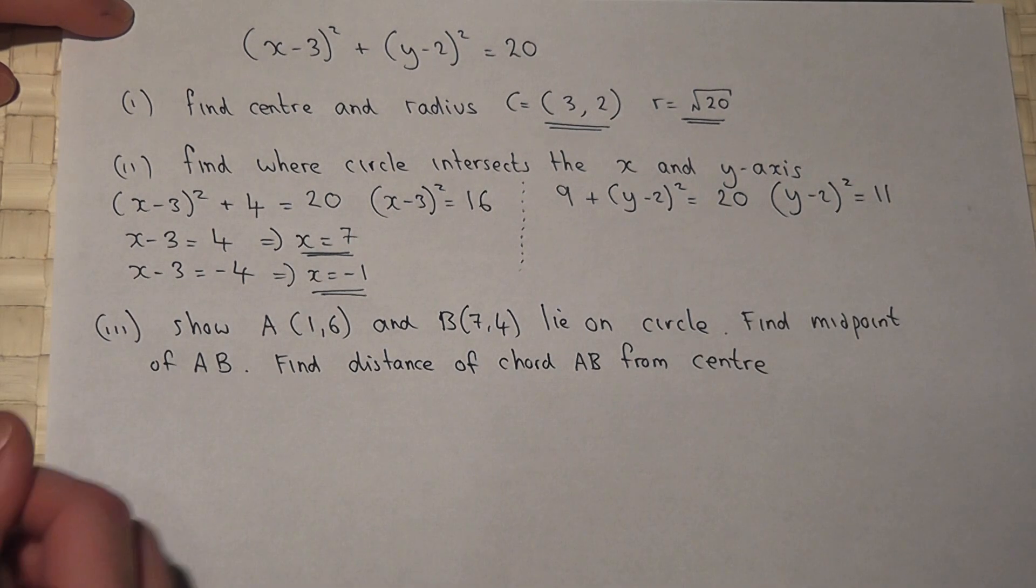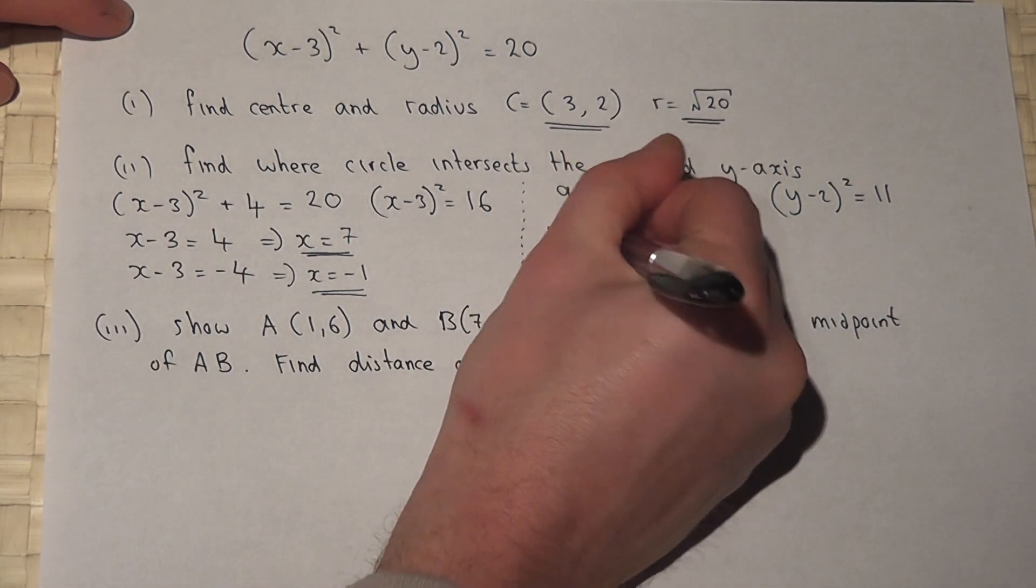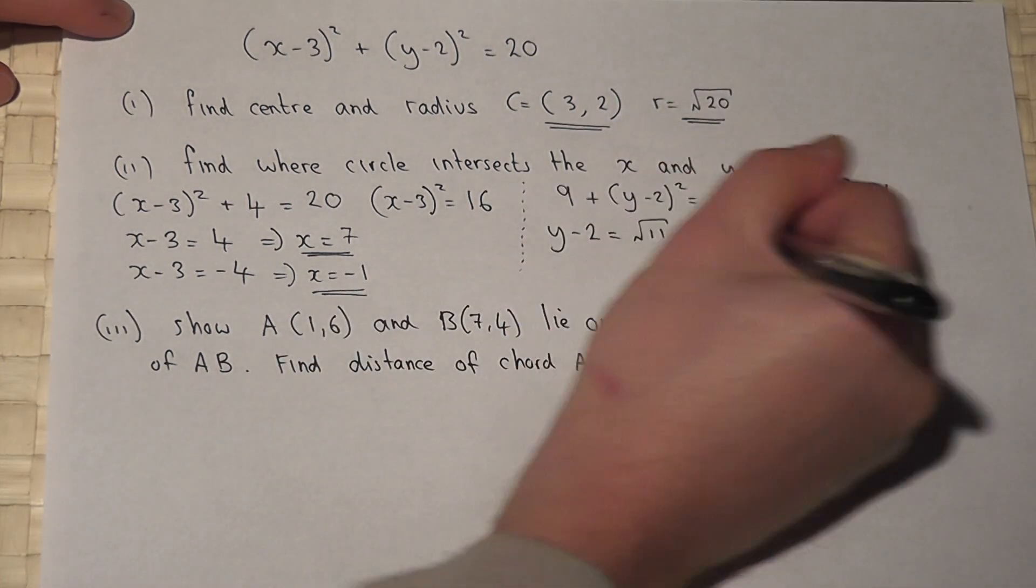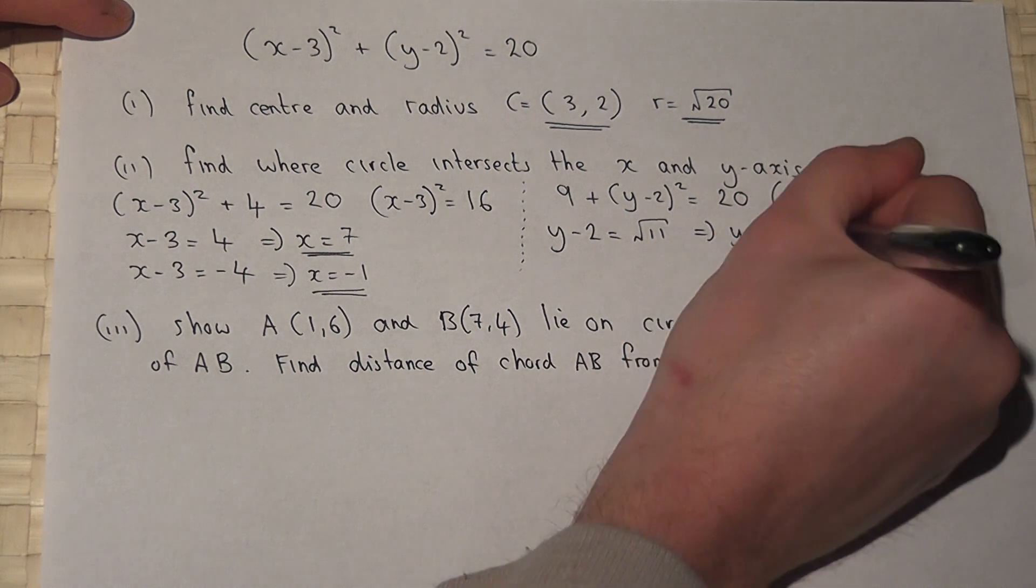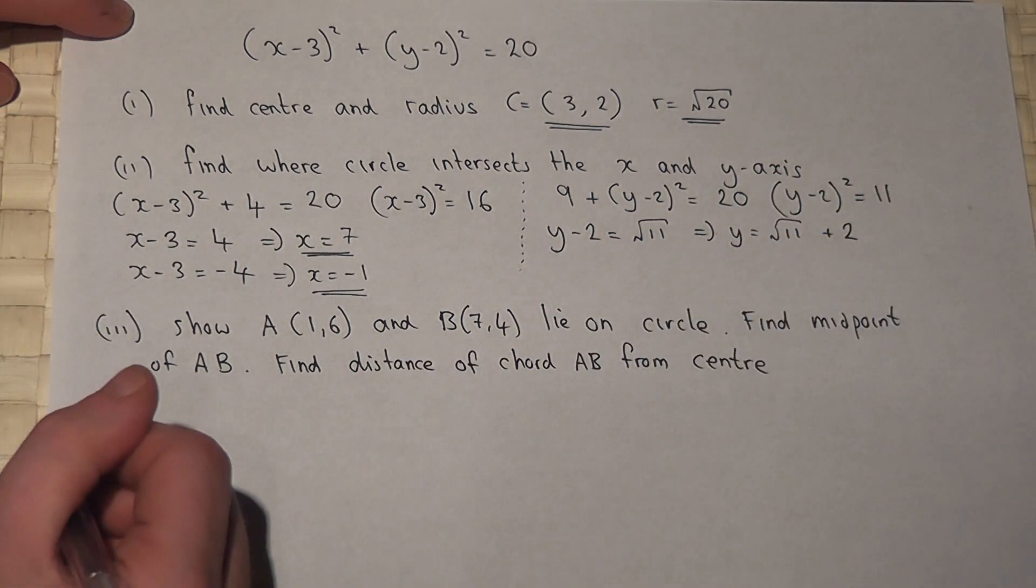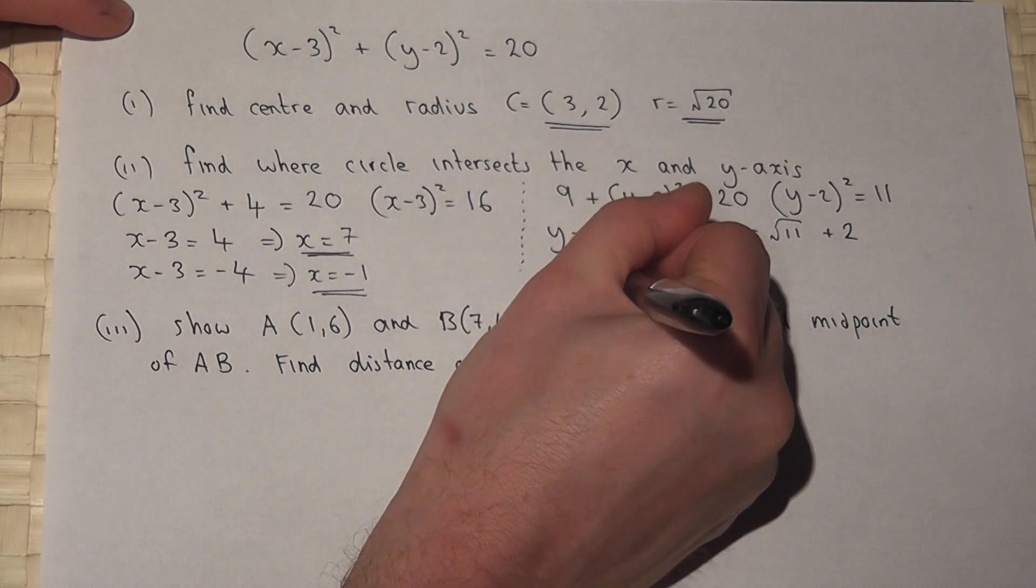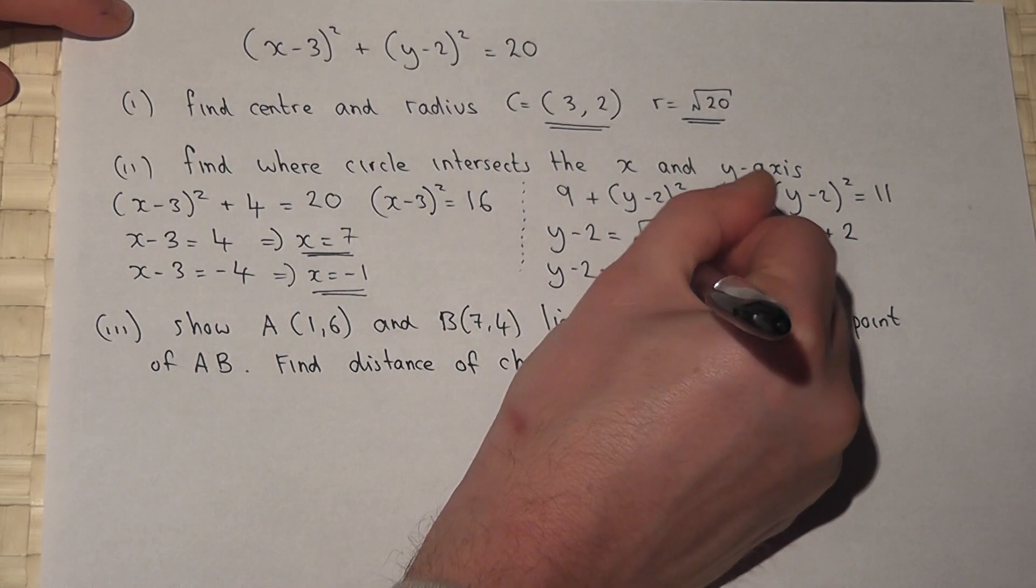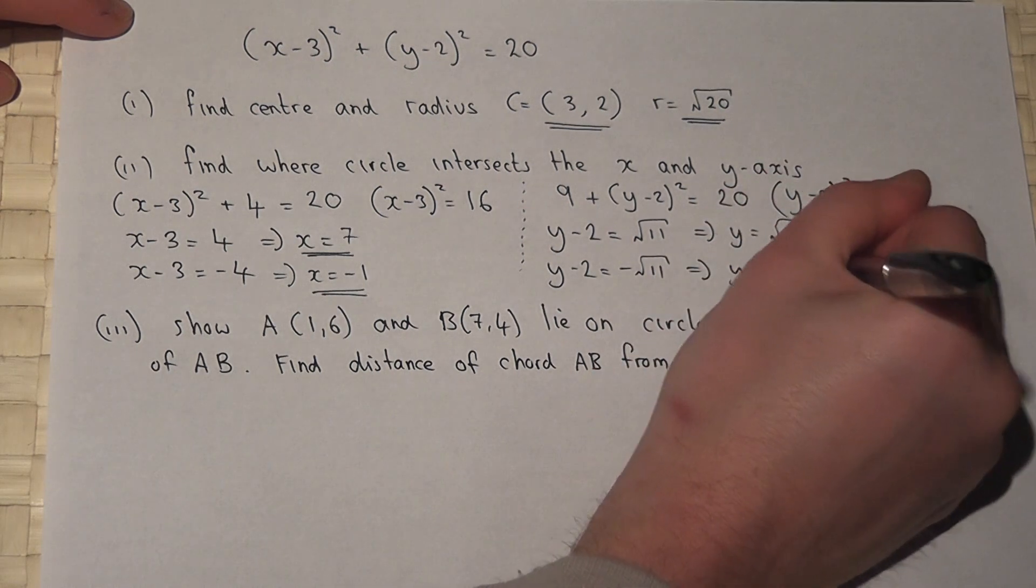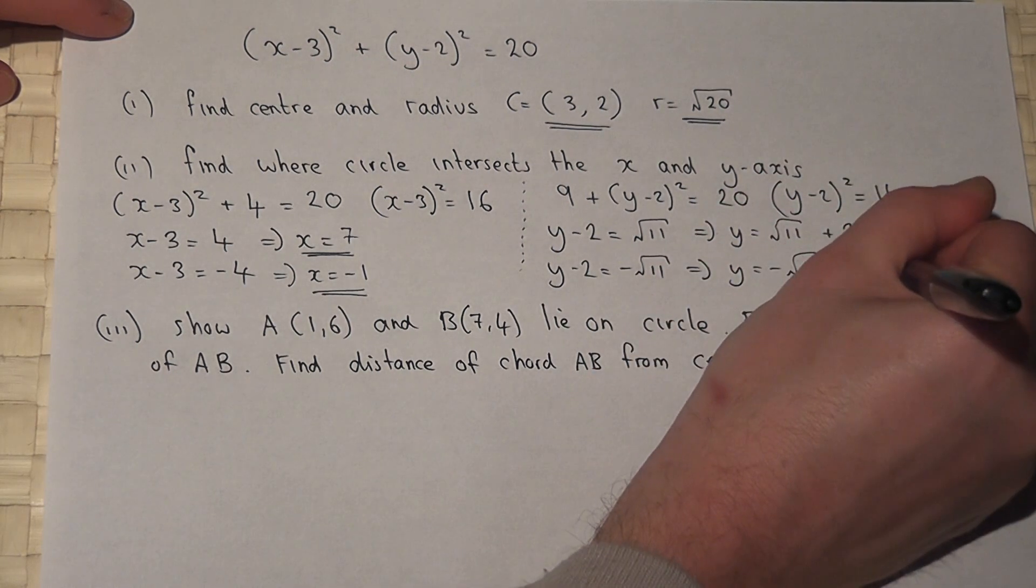And then square root. So y-2 could be √11, so therefore y equals √11 + 2. Or y-2 equals -√11, so therefore y equals -√11 + 2.